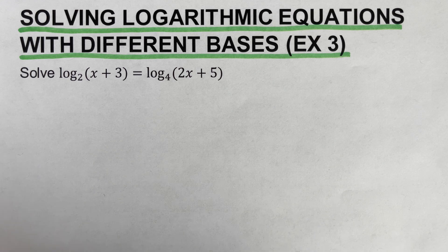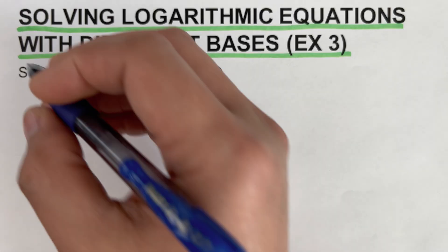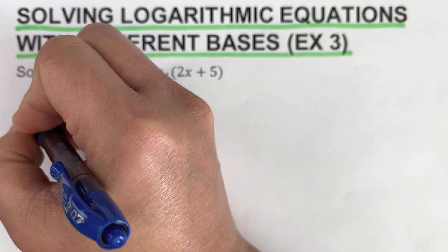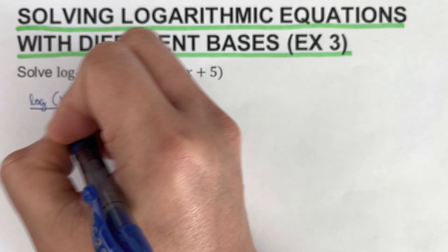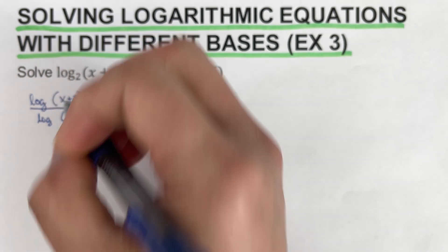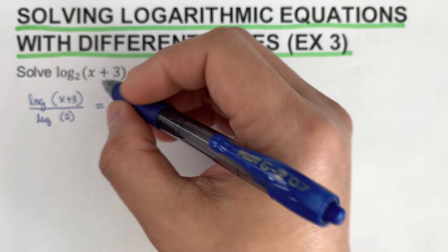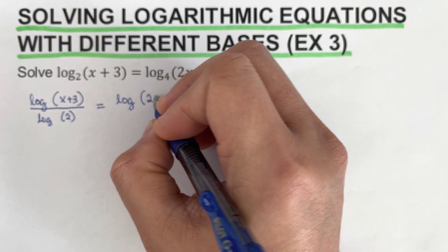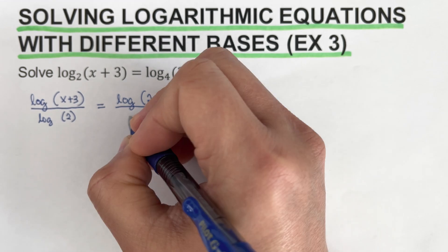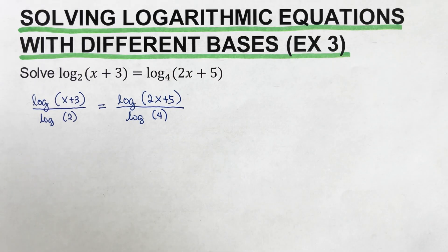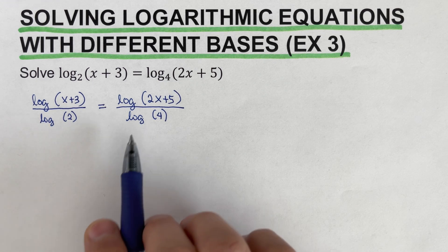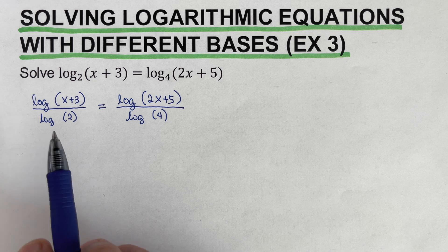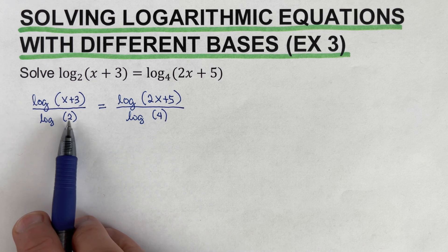We're going to use the change of base formula to rewrite this expression. So the left side comes out as log of (x + 3) over log of 2, and that is equal to the right side rewritten as log of (2x + 5) over log of 4. Our next target is to determine what base to use. We can use any base, but our goal is to make each denominator into a whole number.